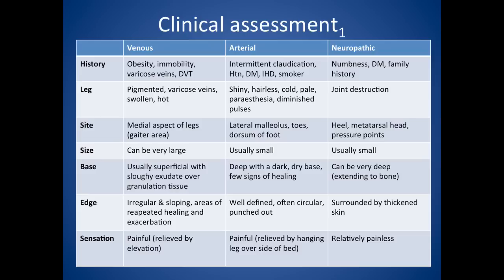Looking at the leg itself: in a venous leg ulcer, the skin would be pigmented, there'd be varicose veins, and the leg might be swollen and hot. In arterial leg ulcers, the leg might be shiny, hairless, cold, pale, paraesthetic, and it would have diminished pulses. In neuropathic ulcer, when you look at the leg, you might see joint destruction.